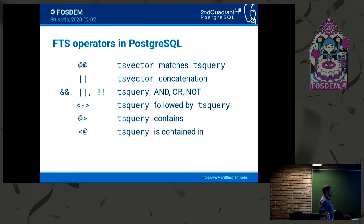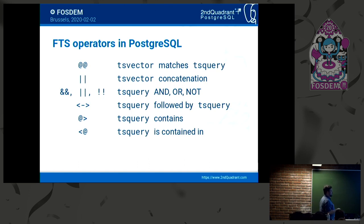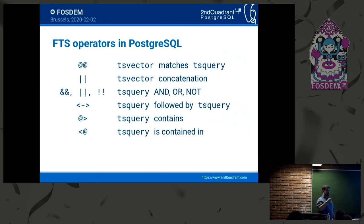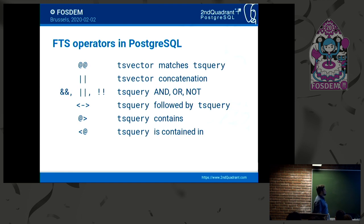The operator types for full text search are the double at-sign (@@), which means tsvector matches tsquery, and it works both ways. We have tsvector concatenation. For tsqueries, we have AND, OR, and NOT operators to formulate your query. We also have the followed-by operator, which means tsquery one must be followed by tsquery two — that defines word order in your search. We also have contains and contained-in operators.